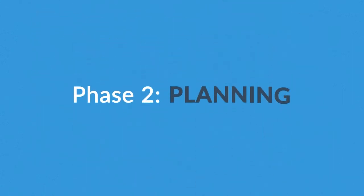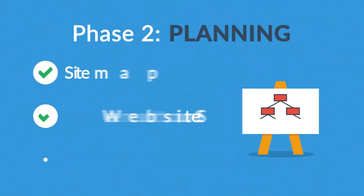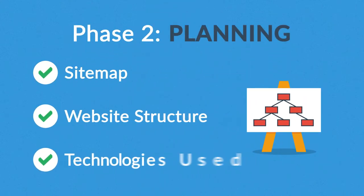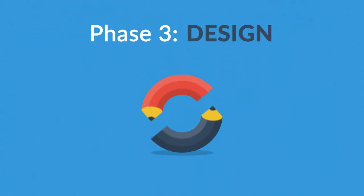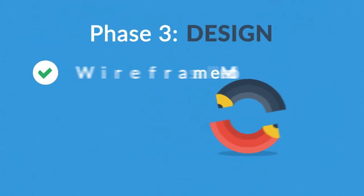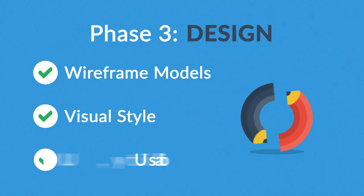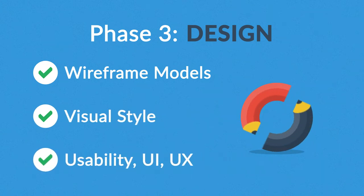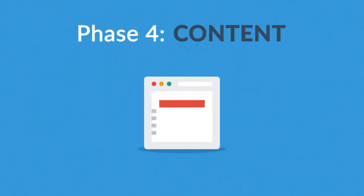Phase two: Planning. A plan includes a definition of the site map, structure, and technologies we're about to use. Phase three: Design. Not only do we focus on wireframe models and the visual style at this stage, but also on the usability of the user interface for the best possible user experience.